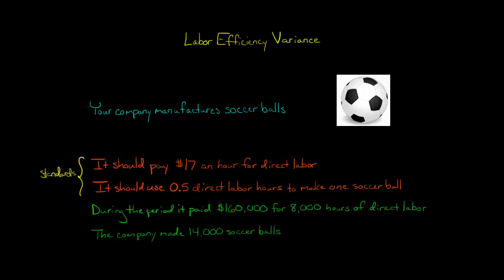In this video, we're going to discuss how to calculate the labor efficiency variance. So let's say that your company manufactures soccer balls and your management team has set the following standards where you believe you should pay $17 an hour for direct labor and that the company should use 0.5 direct labor hours, which is half an hour or 30 minutes, per soccer ball.